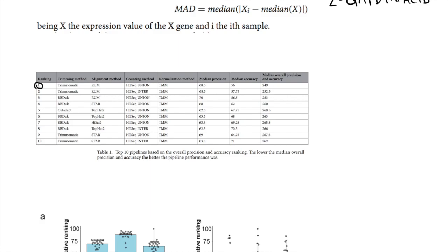And in number one, you can see that the RUM-HTSeq union TMM normalization method had the highest precision and accuracy as a measure of the lowest score ranking. What's notable here, and you can tell right away, is that TMM is always the number one normalization method when you look at counts. And you also see that HTSeq is higher than its other counterparts. Alignment and trimming, there's more variability within the top 10.